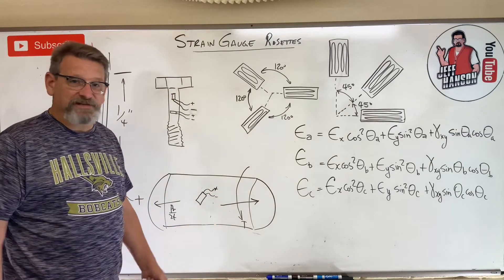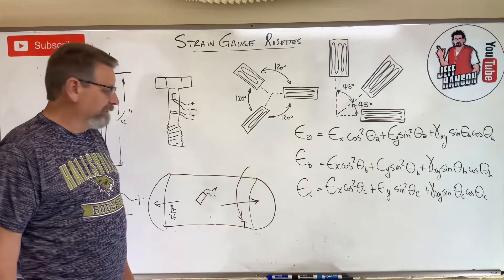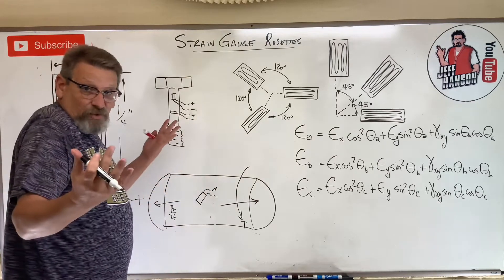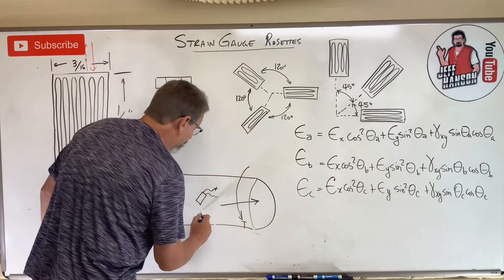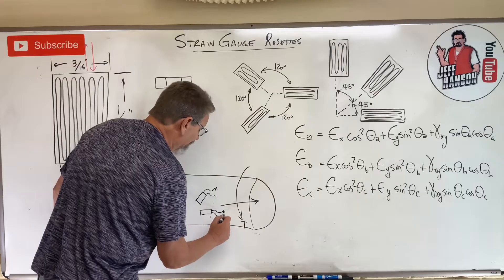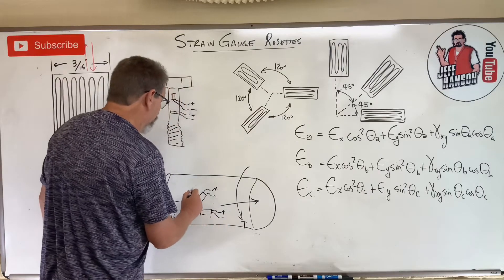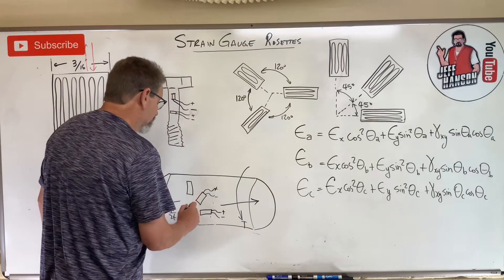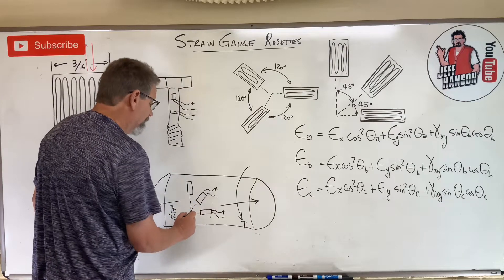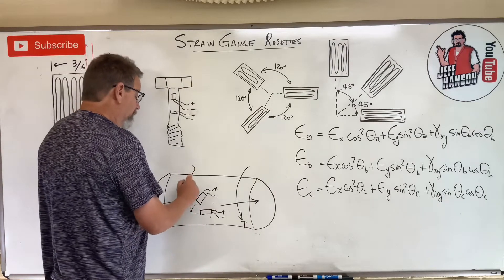So let's put another one on here like this and we'll measure it in that direction. Let's put another one on here like this and we'll measure it in this direction. Plus minus. So what we wind up with is something like this: we'll call this A, B, C.